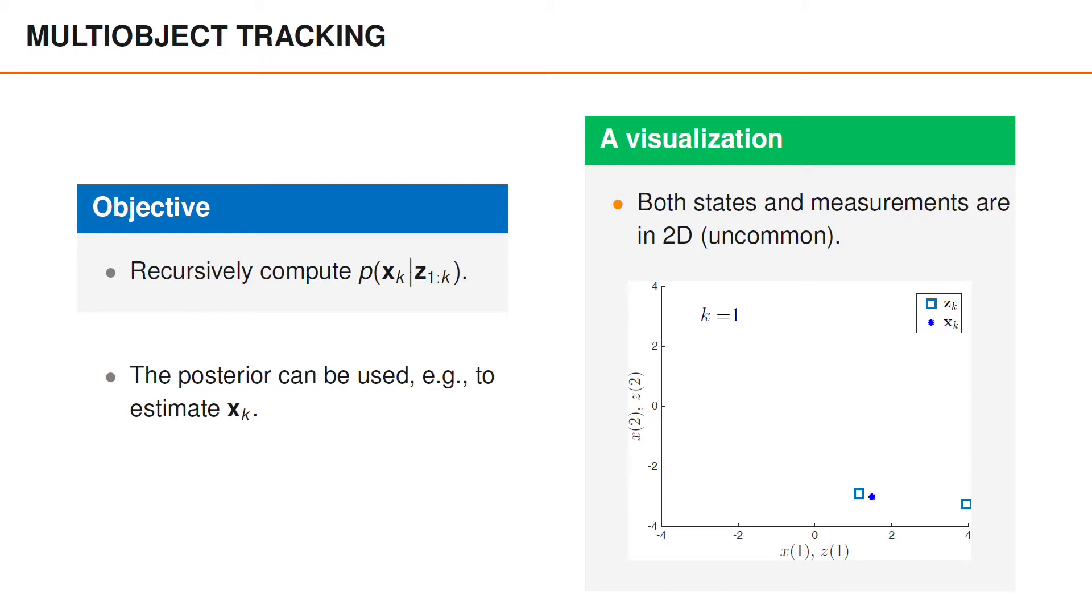In this example, there is one object present at time 1, and we observe one object measurement and one clutter measurement at time 1. As we proceed, we observe object measurements at most times, and also a few clutter measurements. At time 3, a second object appears.